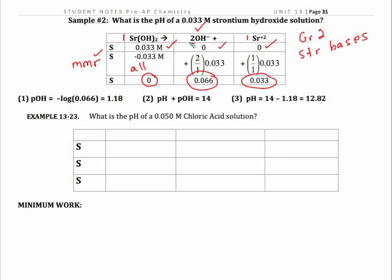But remember, we've got OH-. So it's two steps. First, we've got to get to POH, and then we can get to pH using this formula here.